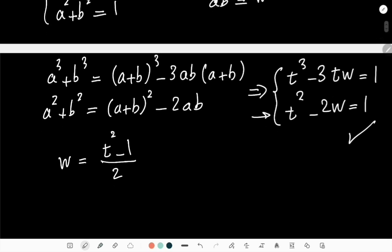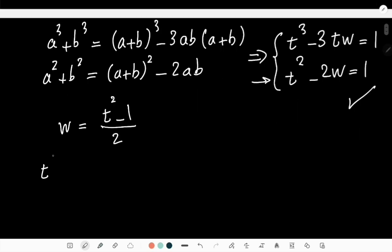And I just have to replace that in the first equation. So I get t³ - 3t(t² - 1)/2 = 1. And that gives me, basically if I simplify this,